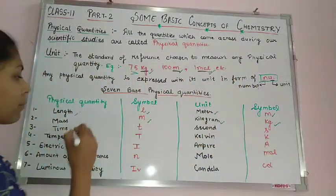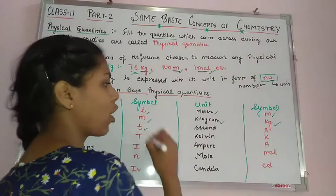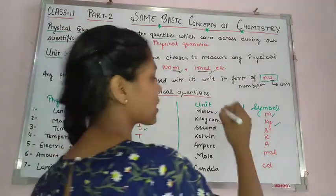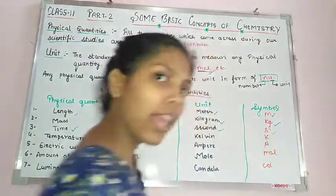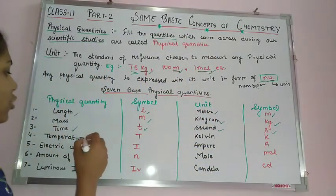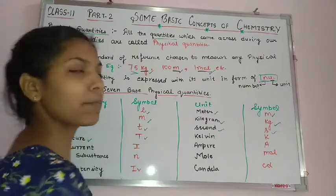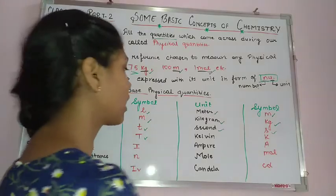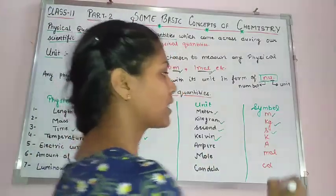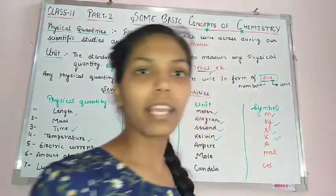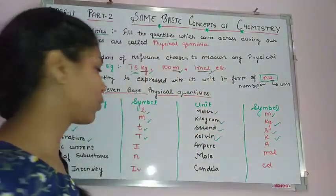The next physical quantity is time; its symbol is small t. Its SI unit is second and its symbol is small s. Temperature is represented by capital T. Its SI unit is Kelvin and its symbol is capital K. Kelvin is the thermodynamic temperature unit.